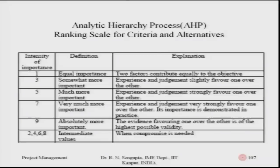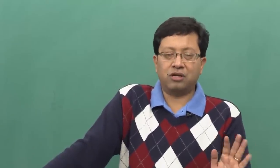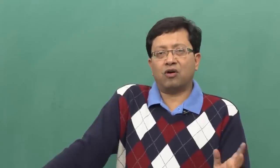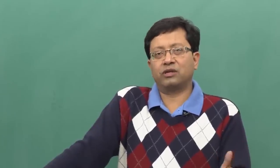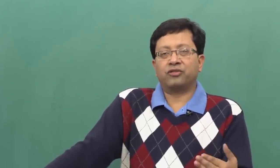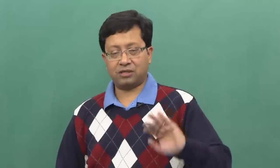You may wonder why even numbers were not used. As prescribed by Saaty, values of two, four, six, and eight are intermediate values used when a compromise is needed between criteria. Generally we consider odd points — one, three, five, seven, nine and their reciprocals — to make a choice between two criteria at whatever level of the hierarchy.